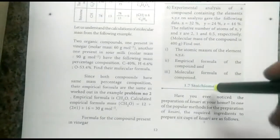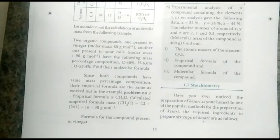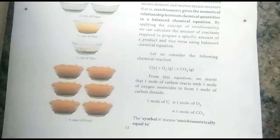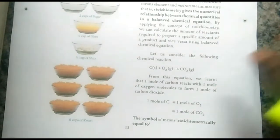We are going to see about stoichiometry. Stoichiometry means it gives a numerical relationship between quantities — the amount of substance in a balanced equation. Stoichiometry gives a numerical relationship between two different quantities in a balanced chemical equation.